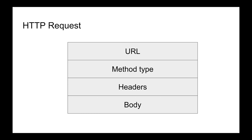GET mainly says 'please give me a page or an image' — essentially reading. If you know SQL, GET is like a SELECT query. POST is like INSERT, PUT is like UPDATE, and DELETE is like DELETE. I made a video comparing GET versus POST and the semantic differences between those two. You need to tell me what method you're executing.